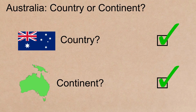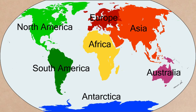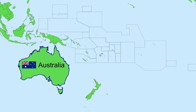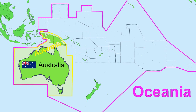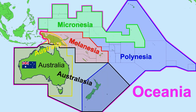The United Nations Geo Scheme, which divides the world into different regions, uses Oceania, and one of the sub-regions is simply called Australia and New Zealand. So, to sum up: there are 7 continents of the world. This is Australia the country. This is Australia the continent. Both of which are part of the wider geographic region known as Oceania, which is divided into 4 different sub-regions: Australasia, Melanesia, Micronesia, and Polynesia.